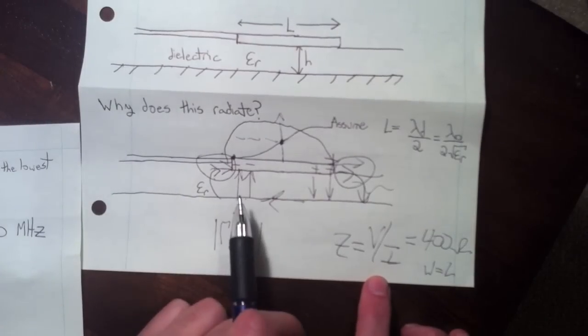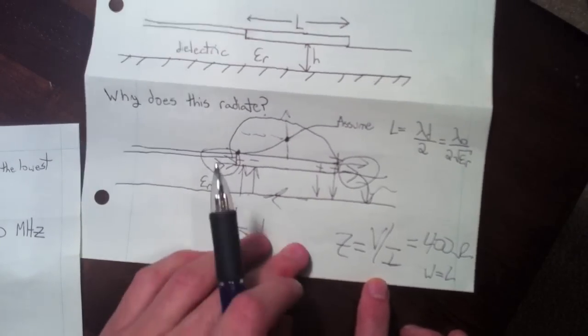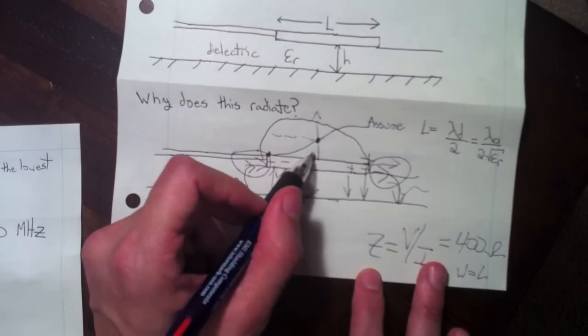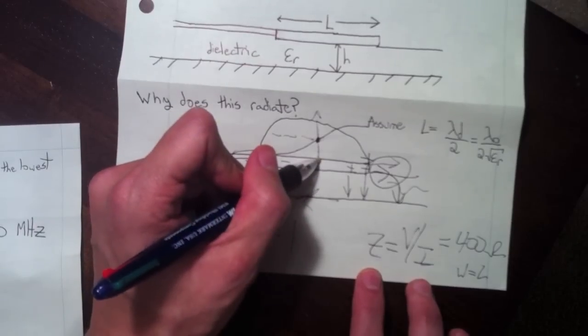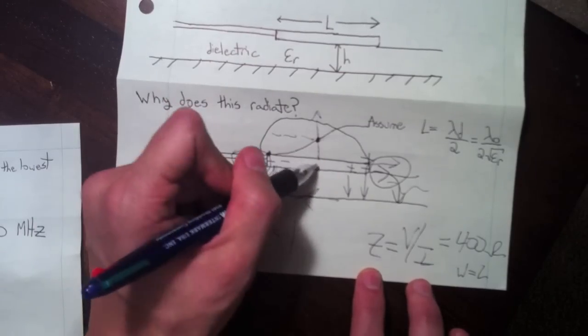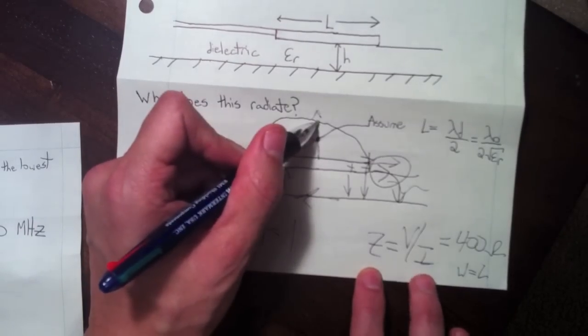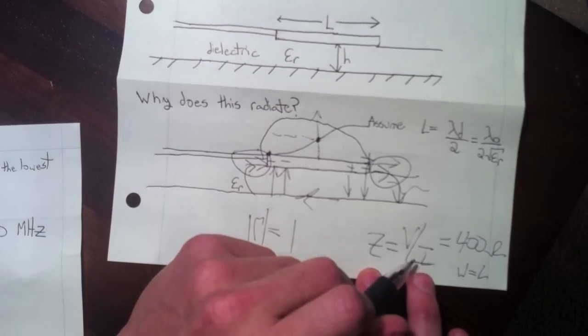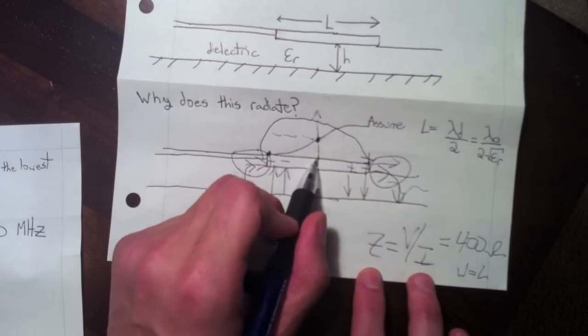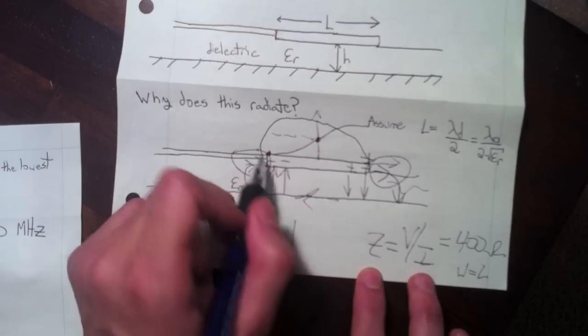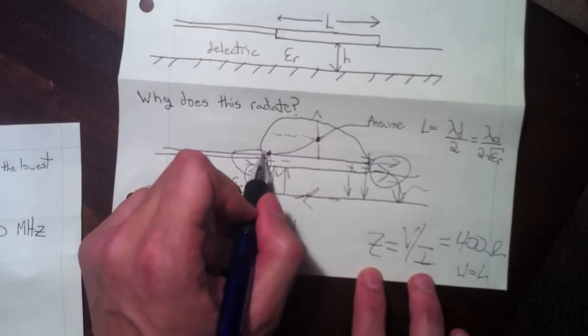If you have a 50 ohm transmission line you're gonna have a lot of reflection. If the impedance is V over I, what if we fed it in the center? Well here the voltage is zero in the center and the current is a peak, which means we have a small number divided by a peak, so you're gonna have zero ohms. So we have zero ohm impedance if we feed it here, infinite if we feed it out here.